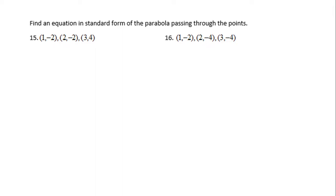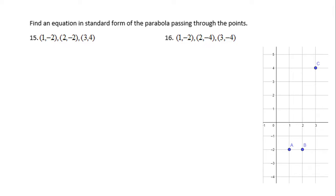In number 15, if you take a look, we have the point (1, -2), the second point (2, -2), and the third point (3, 4), which you can see right here on the right side. The question is: can we find the quadratic equation that is going to go through these three points?